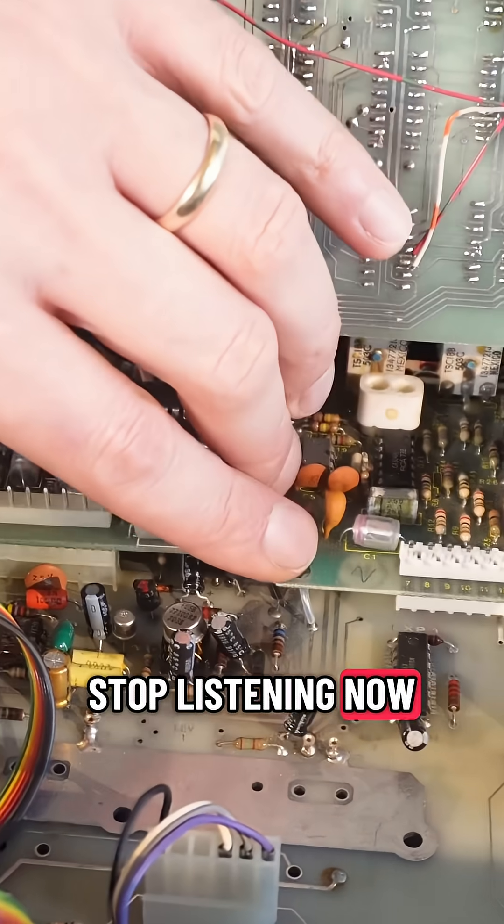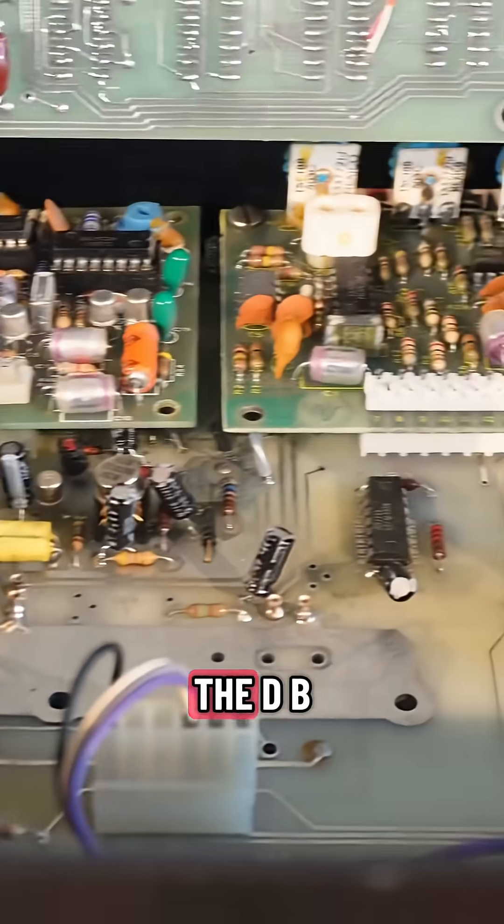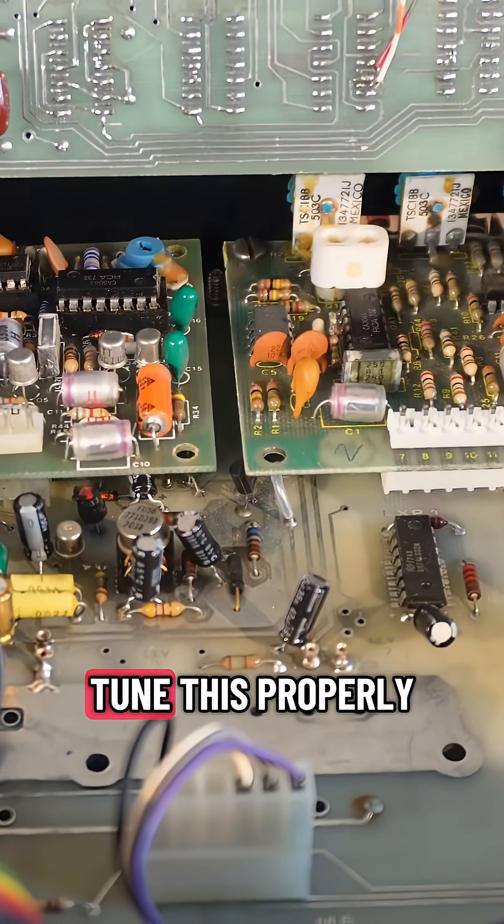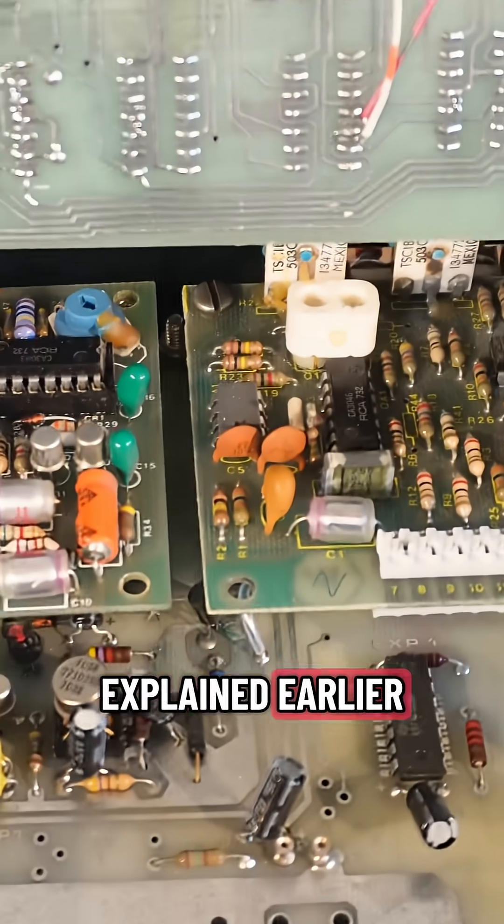Don't stop listening now. So, the audio has been buffered. It has been mixed, and it is now in the DBX card, and when we tune this properly, it will be compressed at a ratio of 2 to 1, as explained earlier.